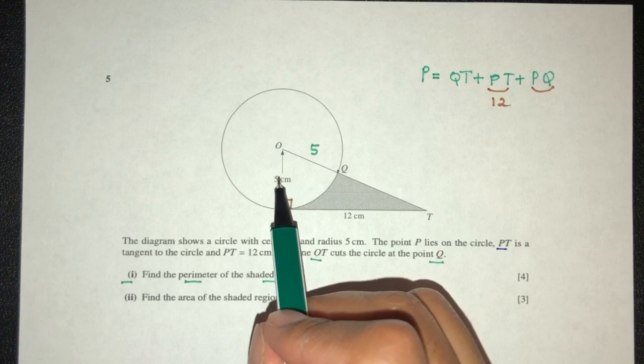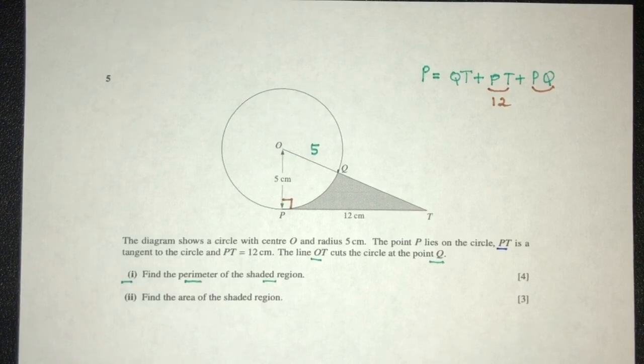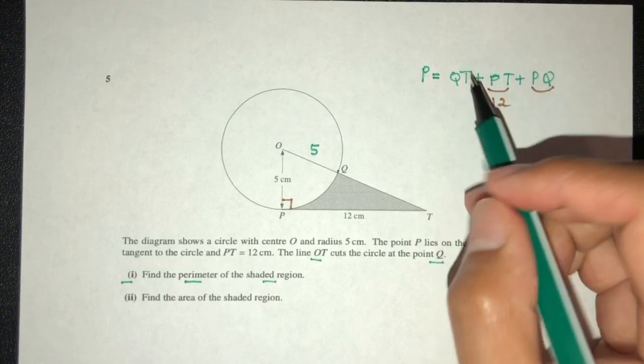So we have this and that. So there's a few things we have to do actually here. Pretty interesting question. I mean, not too bad, but kind of interesting. For example, we have to find PQ and we have to find QT.